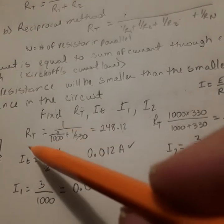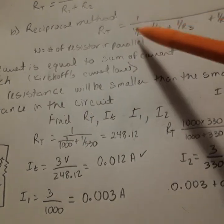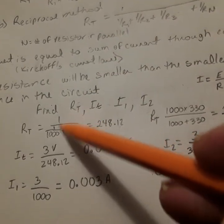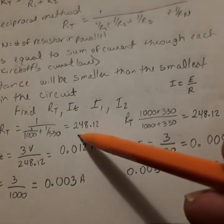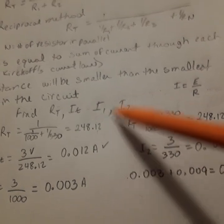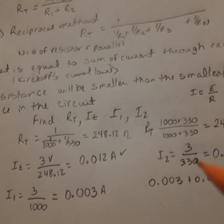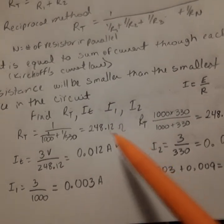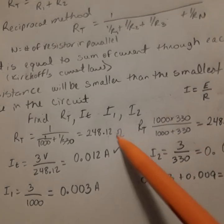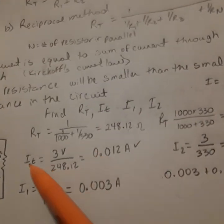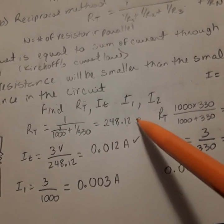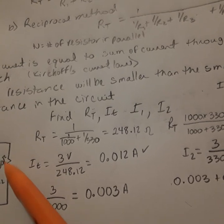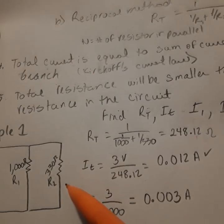The total resistance can be found by either of those two methods. I did it with both methods. This is the reciprocal method, and this is the product over sum method. In both cases, I get 248.12 ohms. Don't forget the units - it's important, especially when you're doing engineering. We can see that the total resistance is less than the smaller resistor, which is 330 ohms.